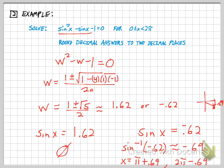So it ends up being pi plus 0.69 and 2 pi minus 0.69. And again, I'm getting those using my reference angle, but also thinking about the quadrants that my answers are in. So those end up being the two solutions to this.